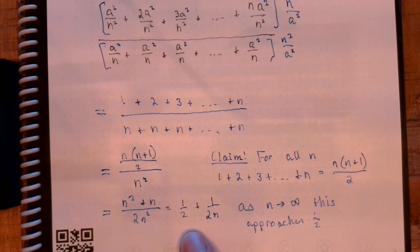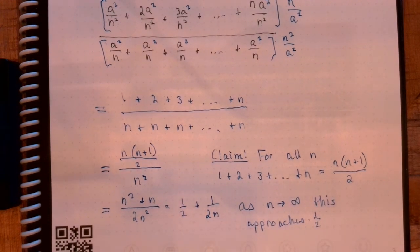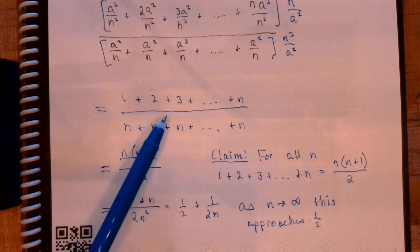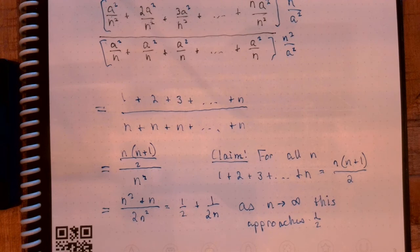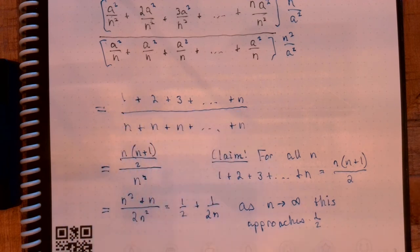Thus, that would establish John Wallis's claim that the area of the triangle is 1 half the area of the related square. Now, of course, the reason he was doing this was not to find the area of the triangle. We could have done that just using the elementary geometry. The reason he did that is he wanted to generalize this, not just the area under y equals x, but the area under y equals x power m for any value of m. And he ends up doing a similar technique right here.